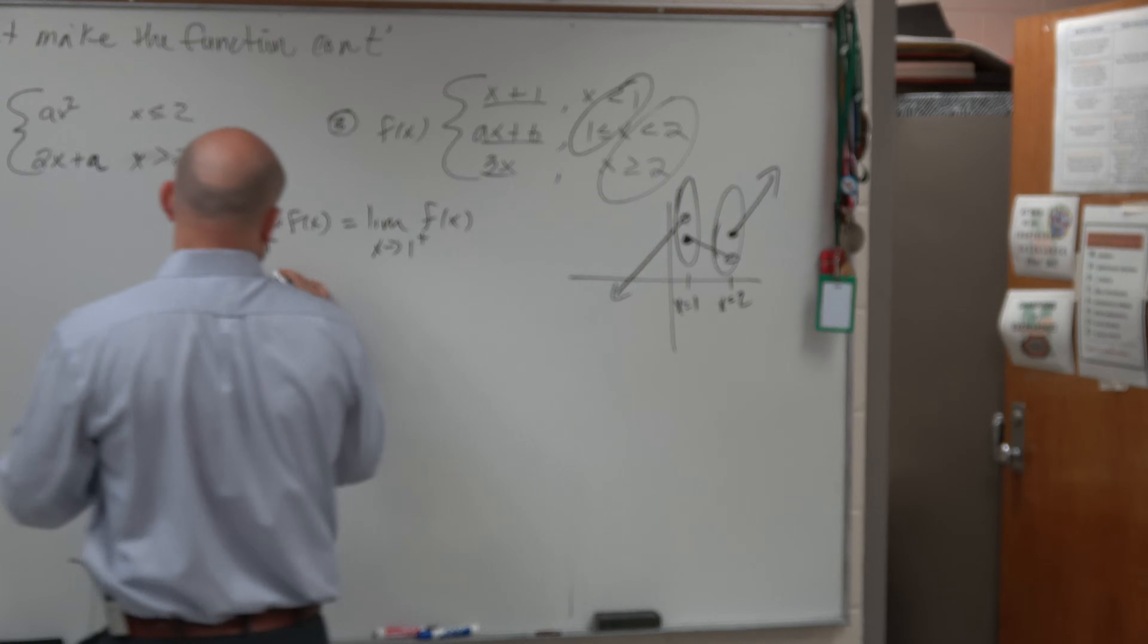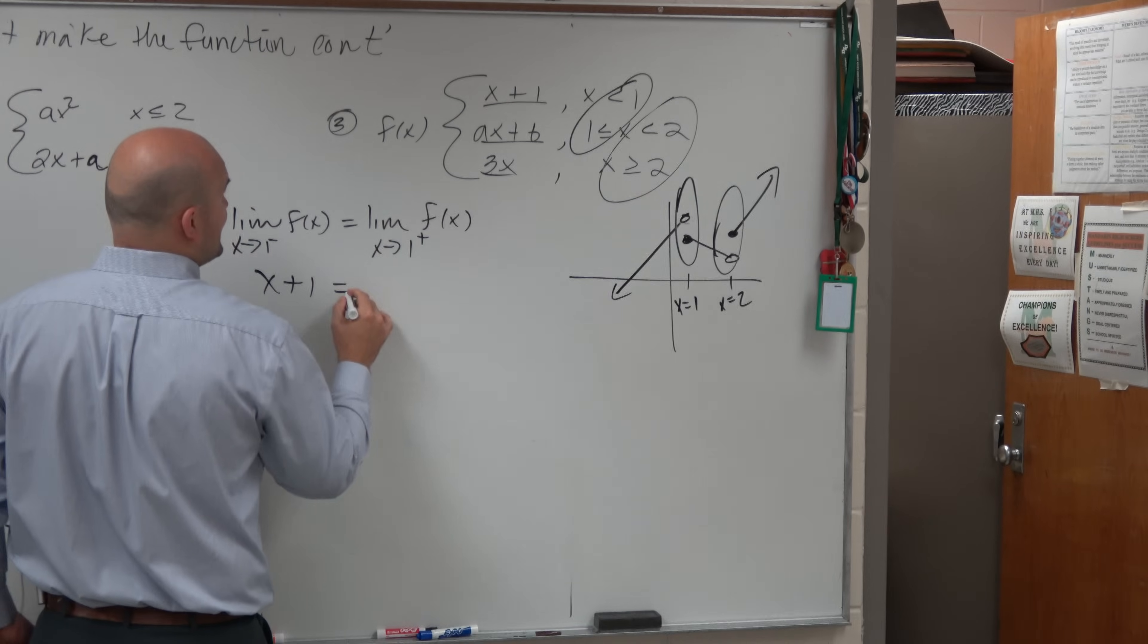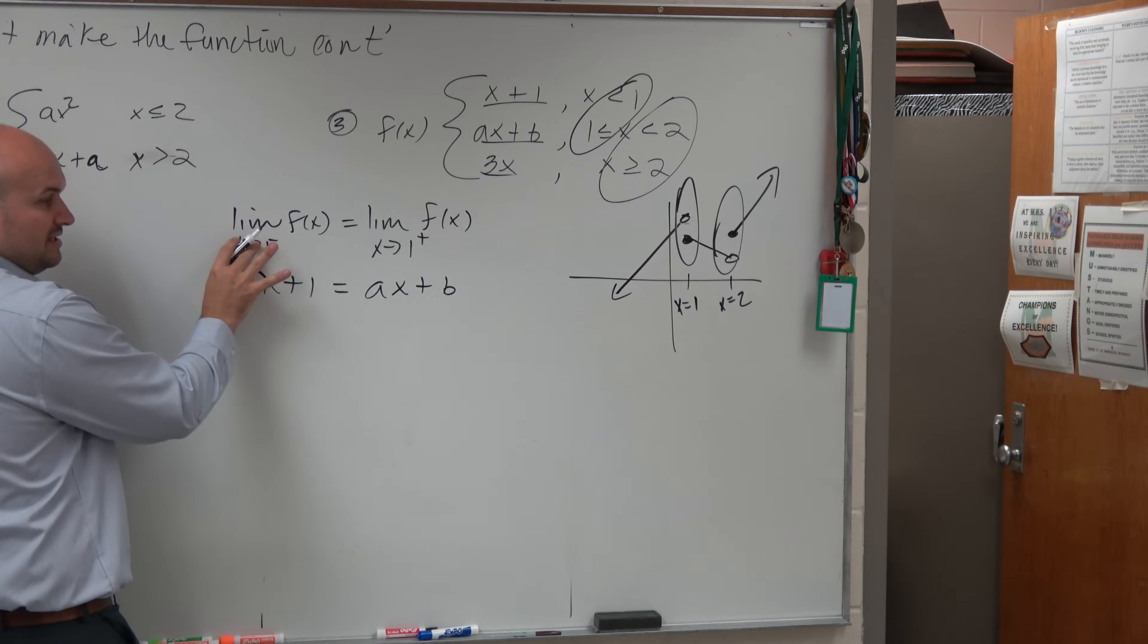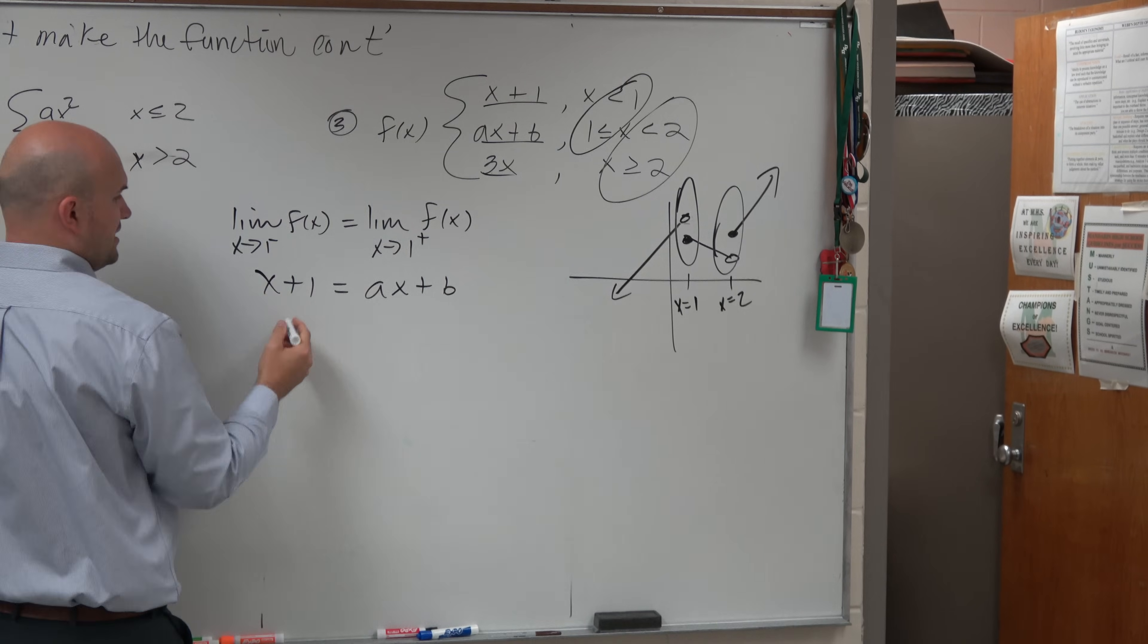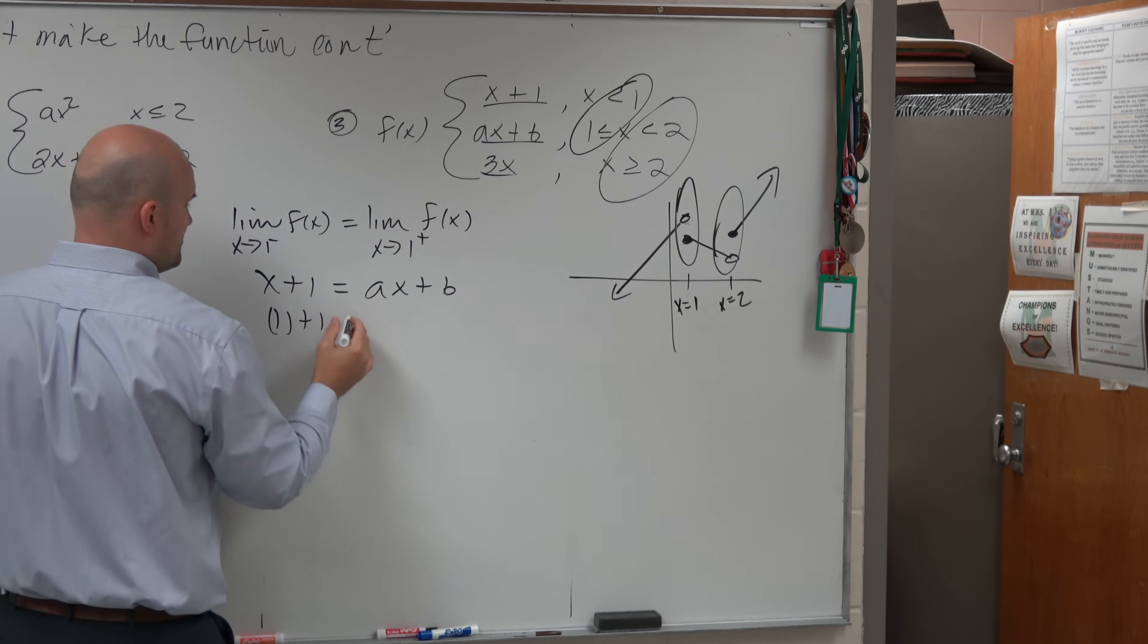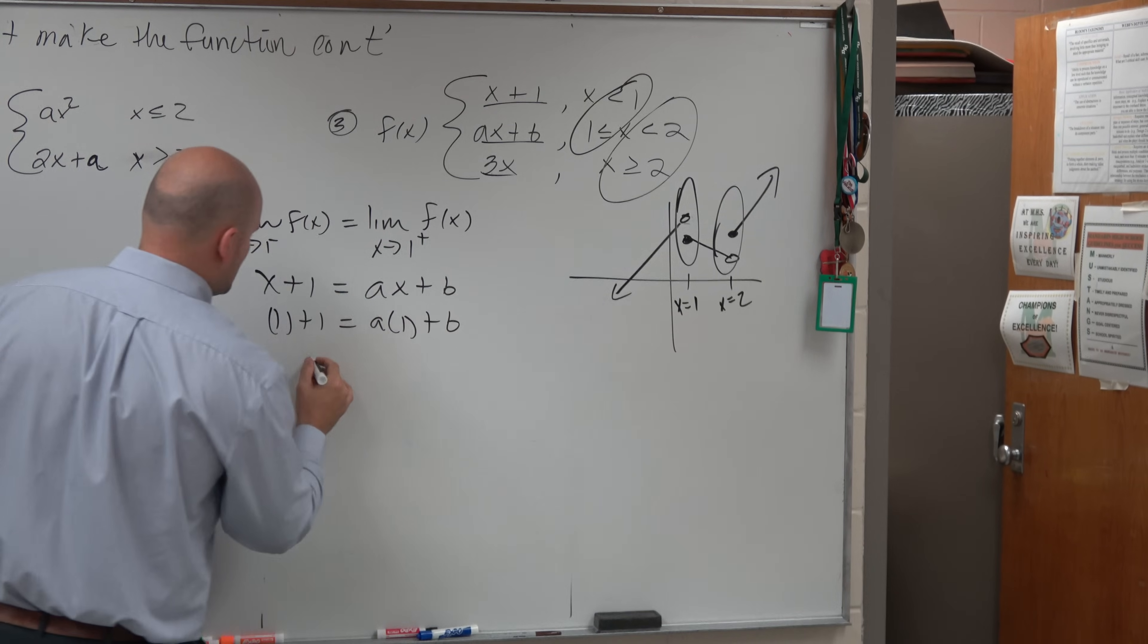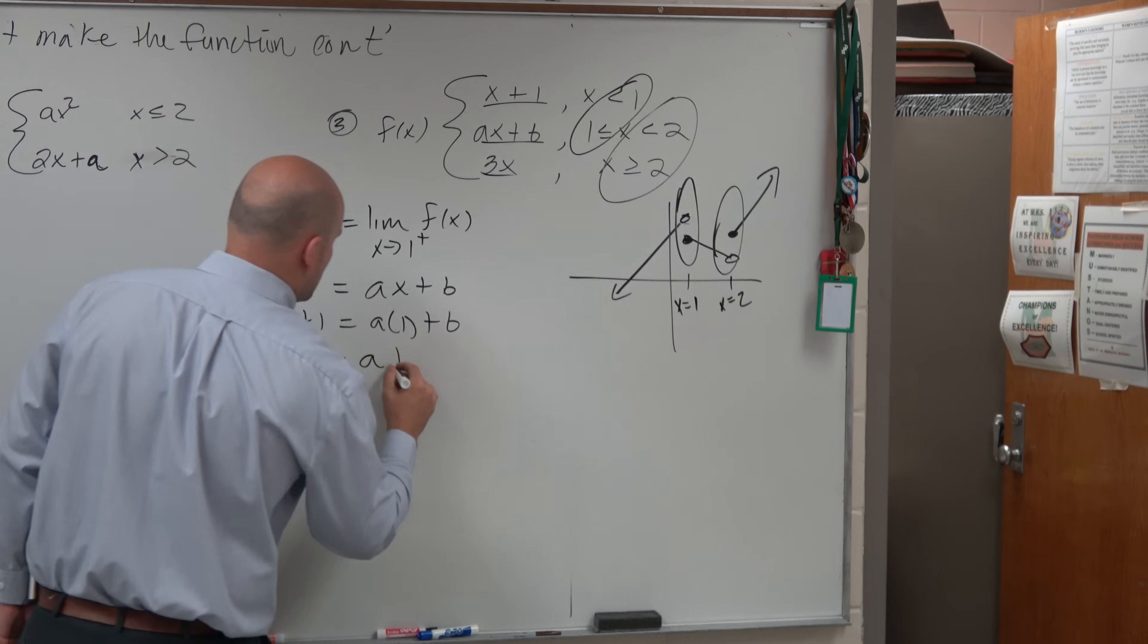So to make them the same, x plus 1 has to equal ax plus b. Now you evaluate in the limit, so therefore you're going to plug in 1 plus 1 equals a times 1 plus b. So your first equation is 2 equals a plus b.